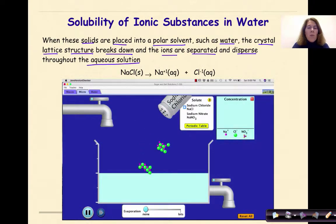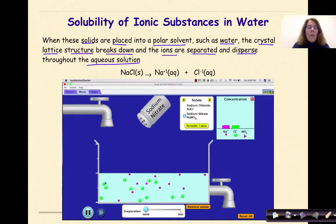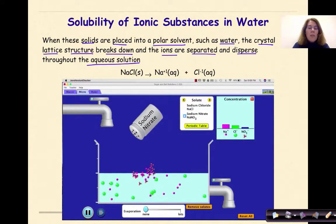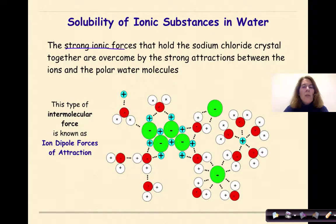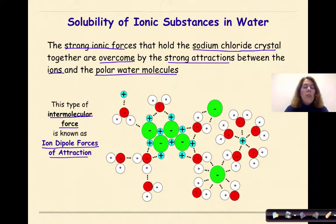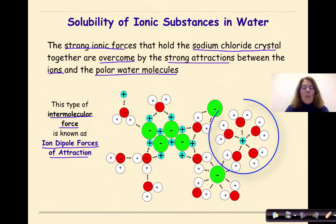In the simulation, sodium chloride starts as a solid then breaks down into individual ions that completely separate from each other. Similarly, sodium nitrate dissolves with sodium ions and nitrate ions separating. The nitrate ions do not break down into nitrogen and oxygen because they are covalently bonded. The strong ionic forces holding the sodium chloride crystal together are overcome by strong attractions between ions and the polar water molecules — this type of intermolecular force is known as ion-dipole forces of attraction.